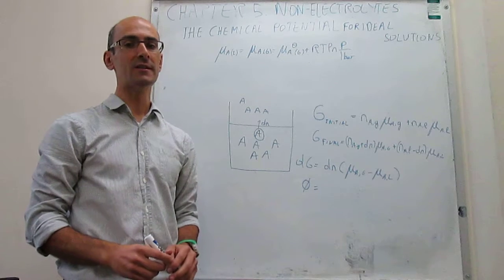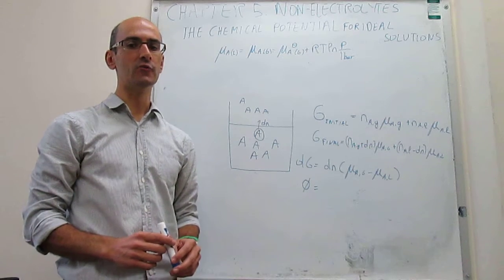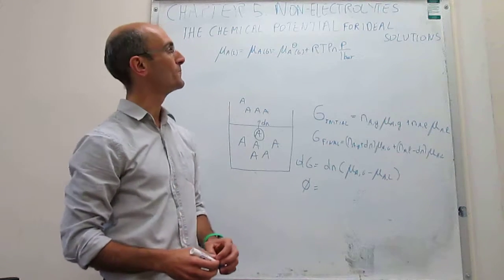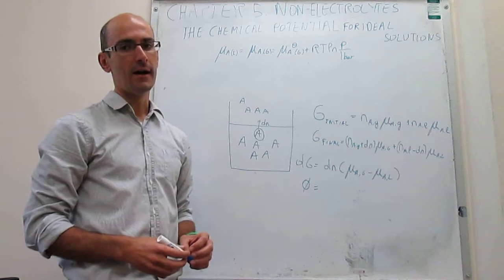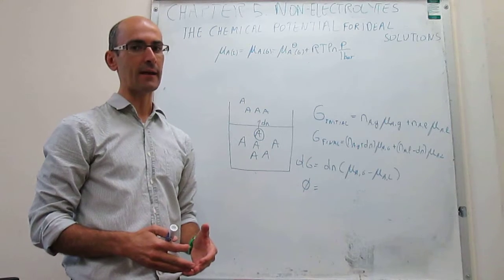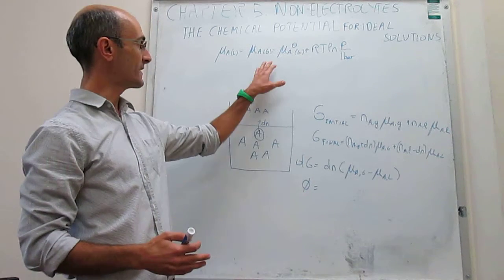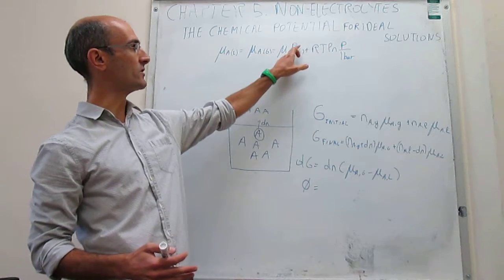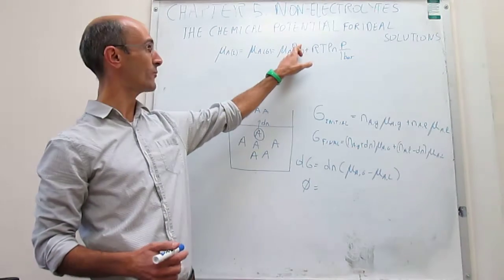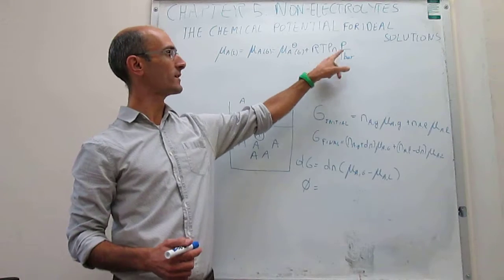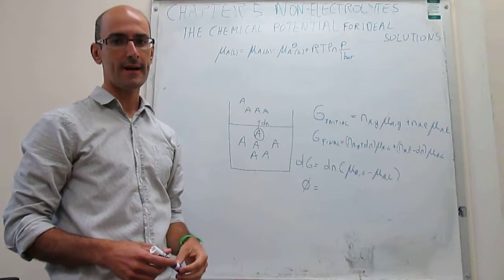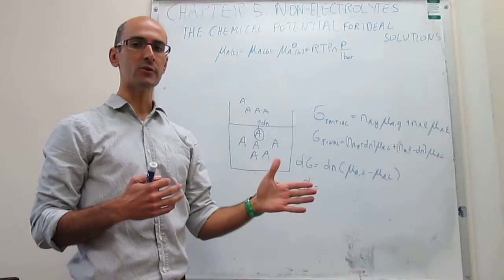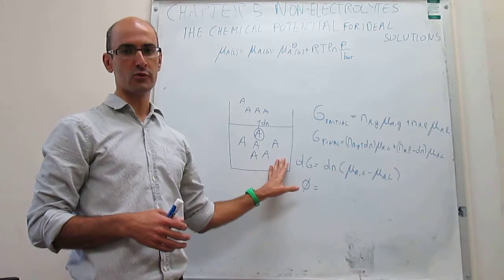This video explains Raoult's Law and how we can use that law to write the chemical potential for an ideal solution. Until now we have learned how to calculate the chemical potential for a gas. The expression is: the chemical potential of a gas equals the chemical potential at the standard pressure of one bar, plus a correction for not being at that pressure. We want to rewrite that expression, but now for the solution phase.